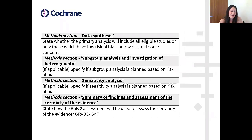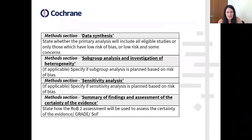There are also other sections where you'd want to talk about risk of bias. In the data synthesis section, it's good to state whether your primary analysis will include all studies or only ones rated at low risk of bias. Authors often do subgroup or sensitivity analyses using risk of bias, and it's good to talk about that in the protocol. Also discuss it in the GRADE section, because risk of bias feeds into GRADE.